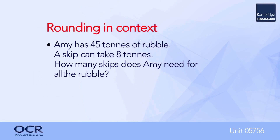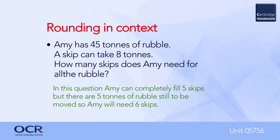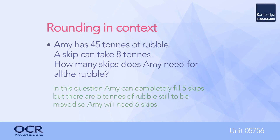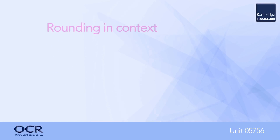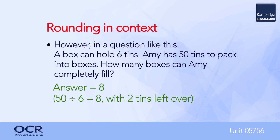Interpreting remainders requires learners to understand the context. In this question, Amy can fill five skips completely because forty-five divided by eight equals five; however, this leaves five tons of rubble, and Amy therefore needs one more skip to remove these five tons. But the example here requires rounding down — Amy will only be able to fill eight boxes.